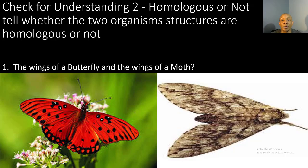You're going to tell whether the two organism structures are homologous or not. Number one: the wings of a butterfly and the wings of a moth — are these structures homologous or not? Write yes if they are homologous and no if they're not. You have 10 seconds.